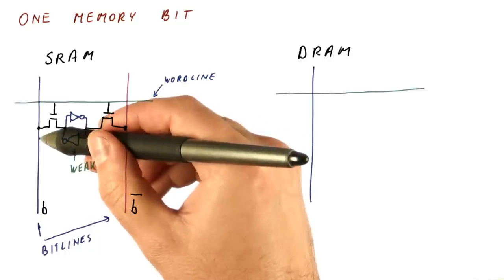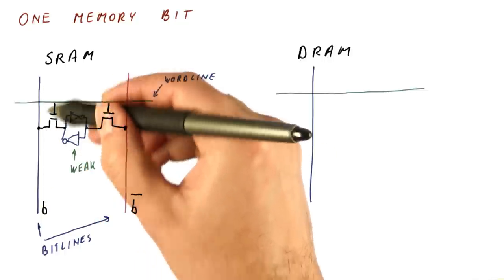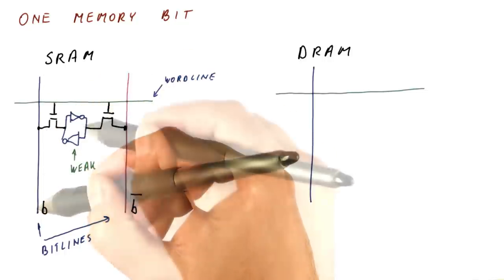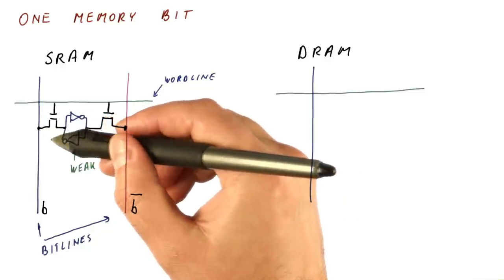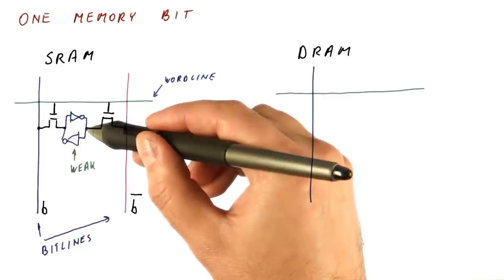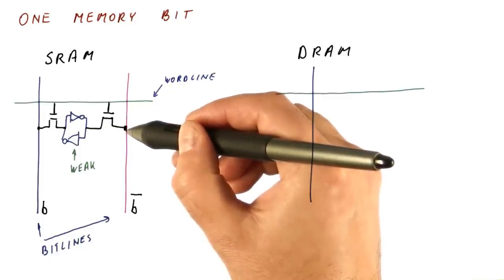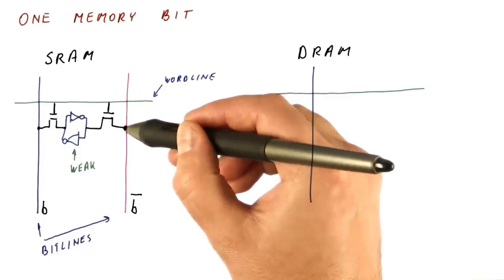And in order to, for example, raise the voltage on the bit line to a value that corresponds to one, these transistors here are weak and cannot pull it to one very fast. They also will try to lower this one down to zero, and they may not be able to do that very fast.